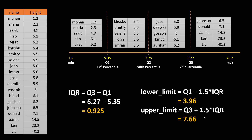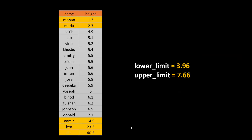Similarly, the upper limit will be Q3 plus 1.5 times IQR. Just remember: Q3 plus 1.5 IQR gives your upper limit. Once you know the upper and lower limit you can exclude all data points with a value less than the lower limit of 3.96 — those two are excluded as outliers — and any value above the upper limit of 7.66 can also be excluded.